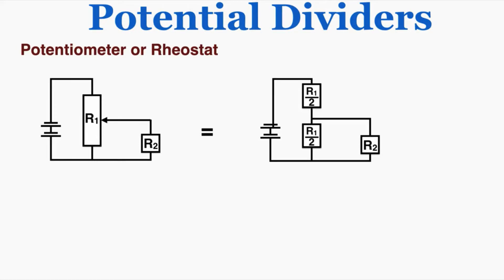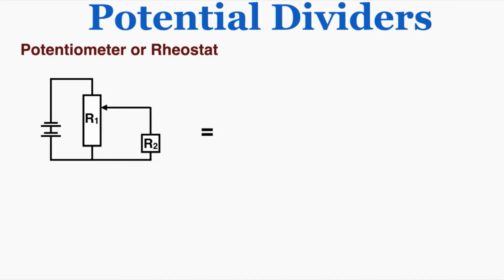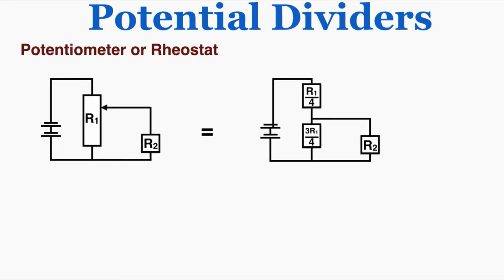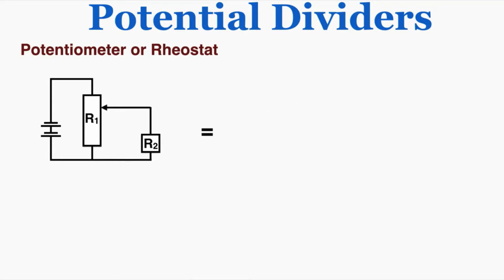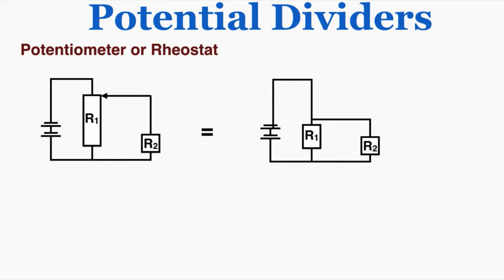Because this is at the exact center and assuming uniform resistance throughout the potentiometer, each individual part would just be the total divided by two. If we moved it to three quarters of the way up, the top part would have a resistance of one-fourth of the total and the bottom part three-fourths. If we move the wire all the way to the top, there's no longer any current through the resistive part in series — it's all in parallel. And if we brought it all the way down, it would all be in series.